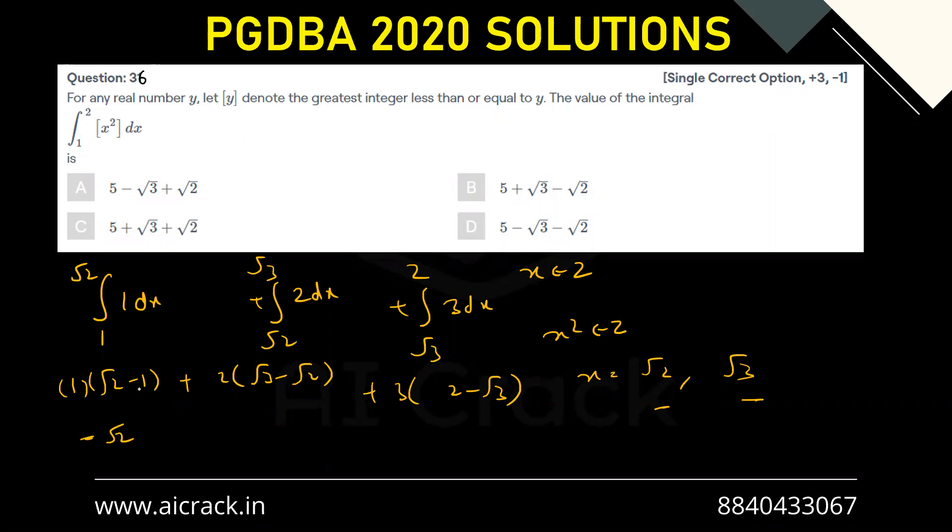This is -1 and we have +6 over here, so -5, sorry, +5. And we have 2√3 from here and -3√3 from here, so we'll be getting -√3. So the answer is -5 - √3 - √2. So D is the correct answer. Thank you.